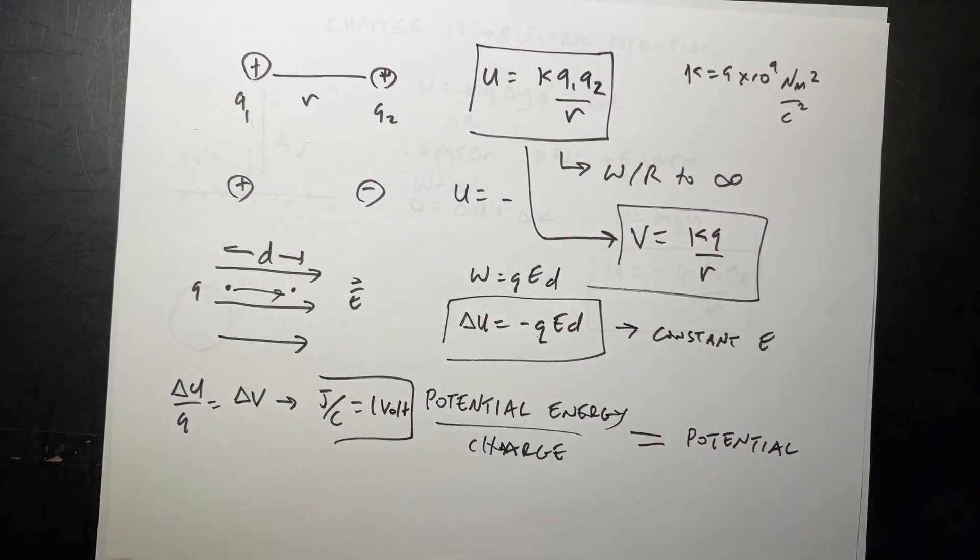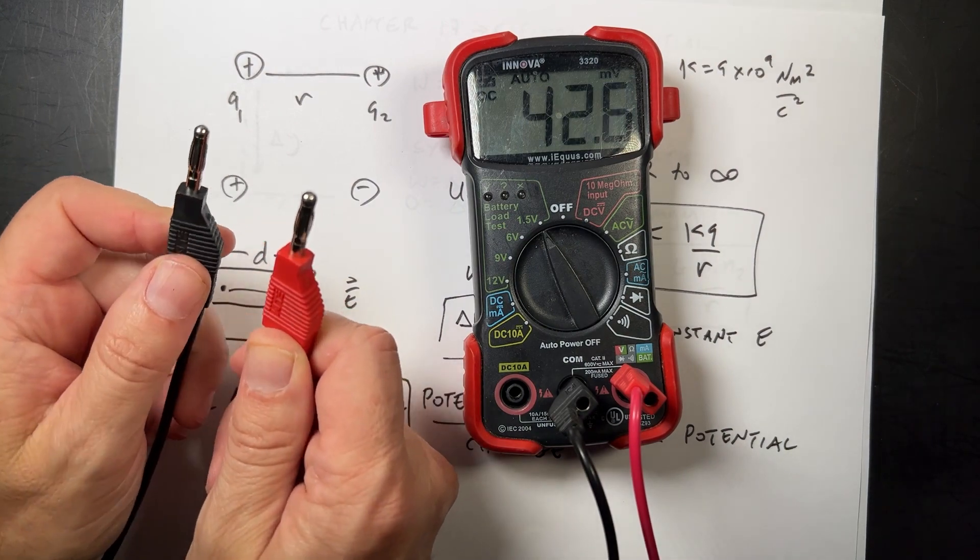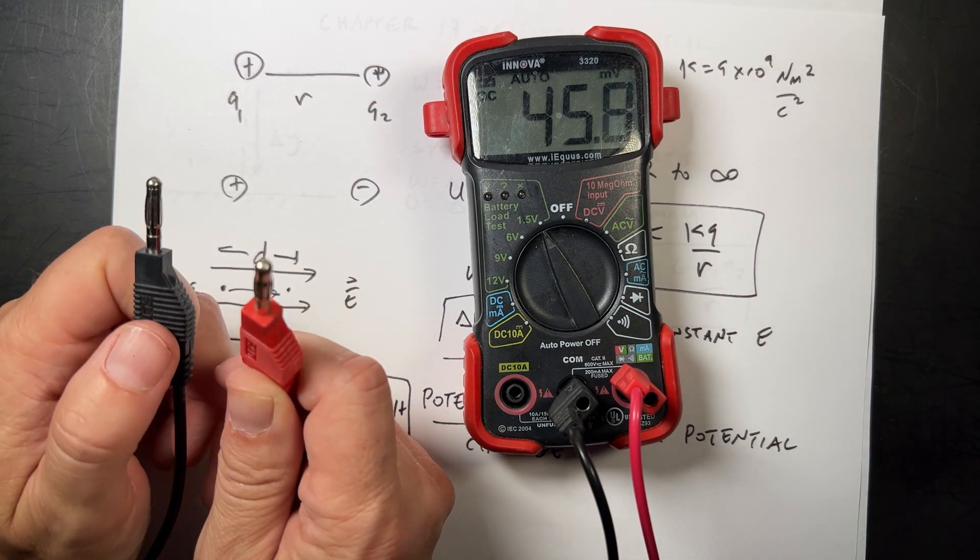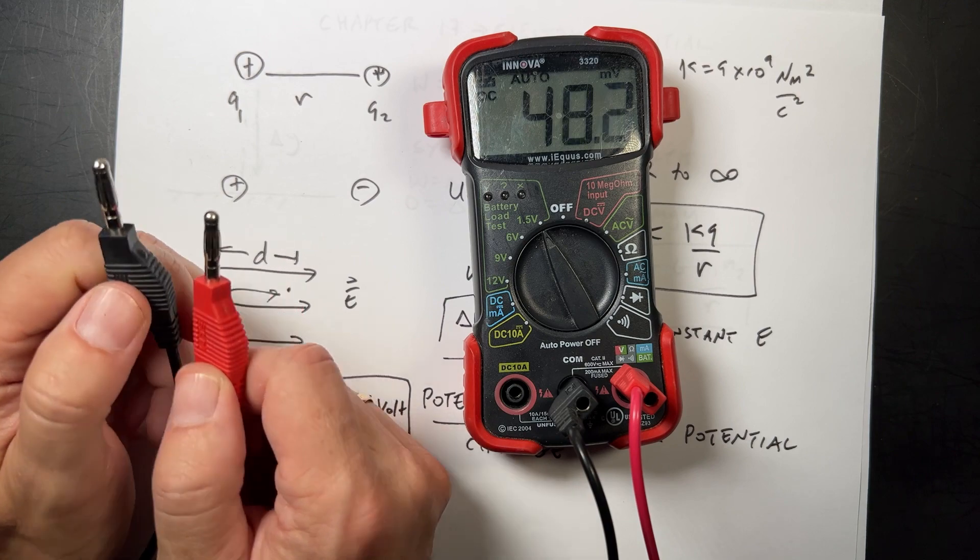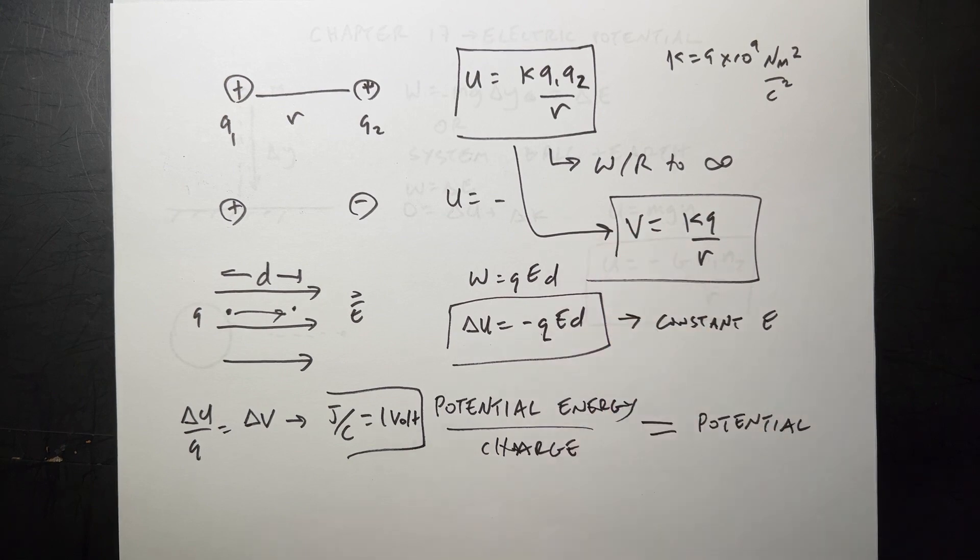This is voltage. We talked about it. And the most important thing, it does need two wires. We are talking about a change in potential. Even when I write this, it's a change, right, because the other end is V equals zero at infinity.